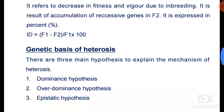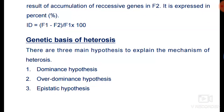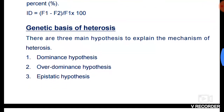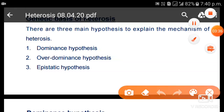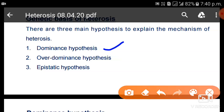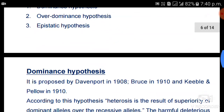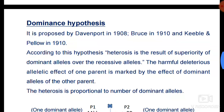Next is the genetic basis of heterosis. There are three main hypotheses to explain the mechanism of heterosis: first is the dominance hypothesis, second is the over-dominance hypothesis, and third is the epistatic hypothesis. Let's take the first one.